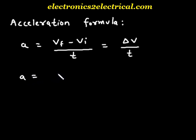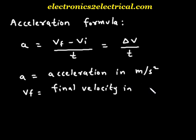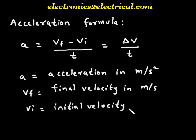A is equal to Acceleration in meter per second square. VF is equal to Final Velocity in meter per second. VI is equal to Initial Velocity in meter per second. T is equal to Time in which the change occurs in seconds.